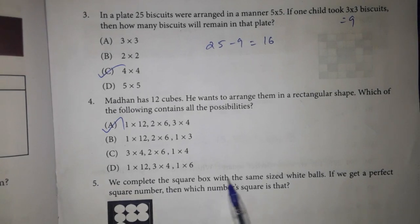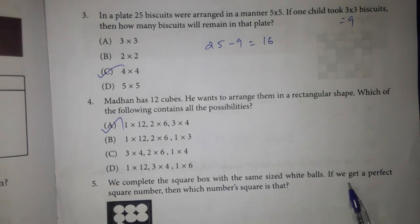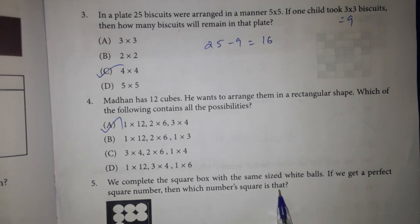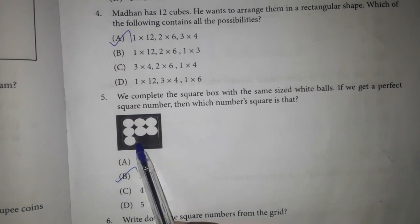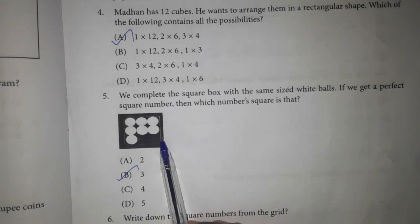We complete the square box with the same size white balls. If we get a perfect square number, then which number square is that? Answer option B. 3. If we fill 2 balls, then we have 9 balls.